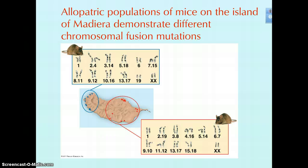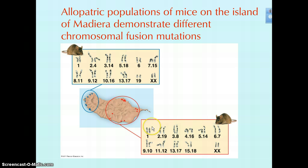Madeira, this particular island, has some mountainous regions, so there's a geographic barrier that separates these mouse populations. Over time, chromosomal changes have occurred between these two populations, and now they have distinct genes that separate them.